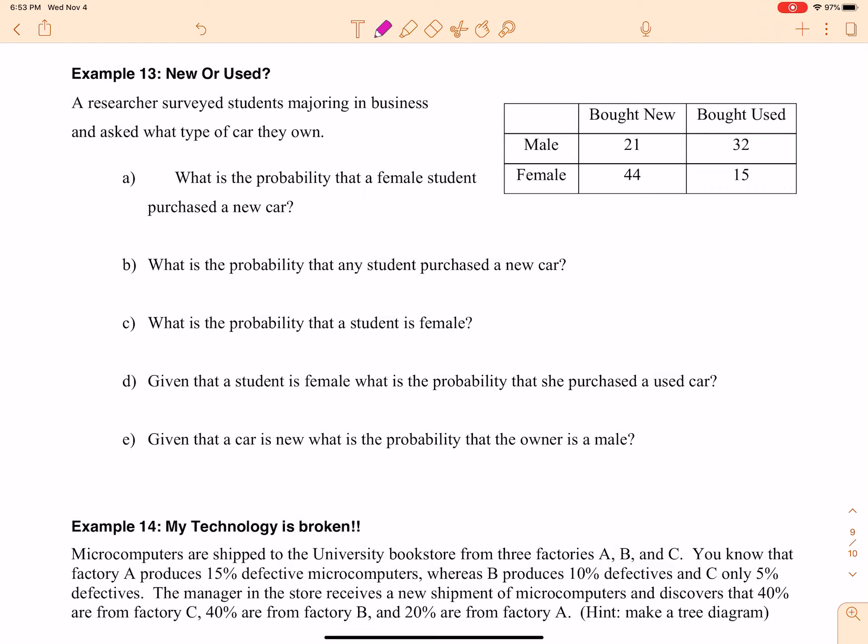All right, AP Statistics, here we are at example 13, new or used. A researcher surveyed students majoring in business and asked what type of car they own. All right, and here you've got your data right over here.